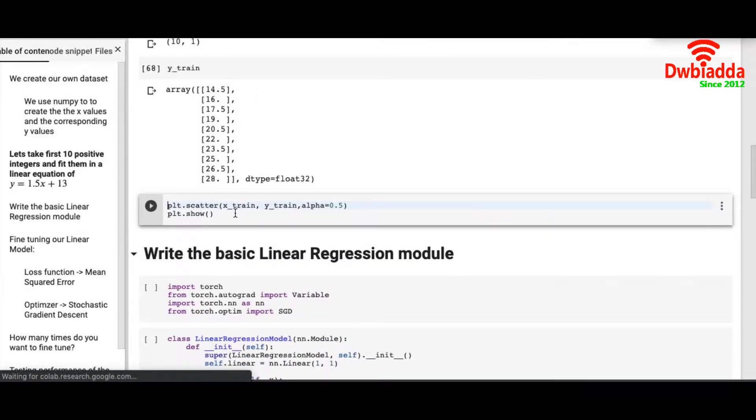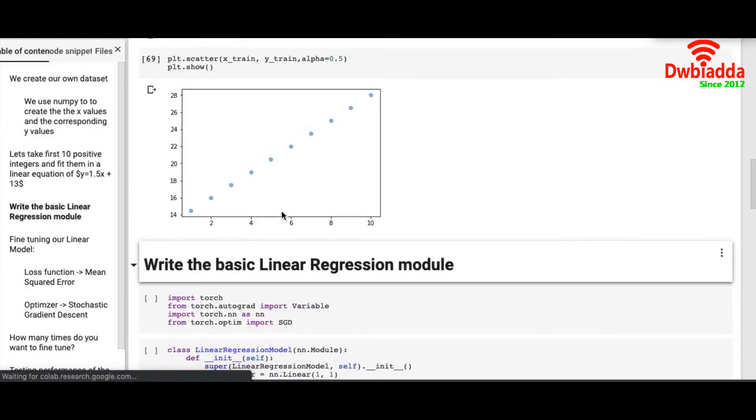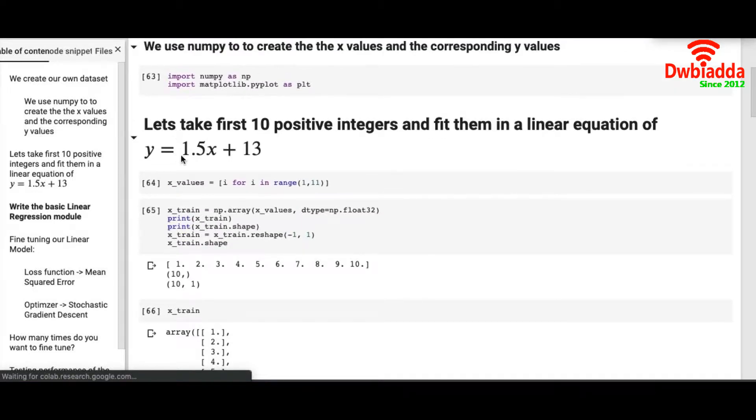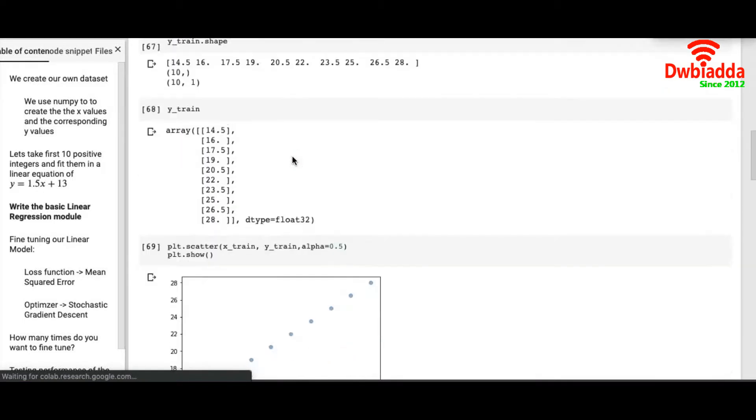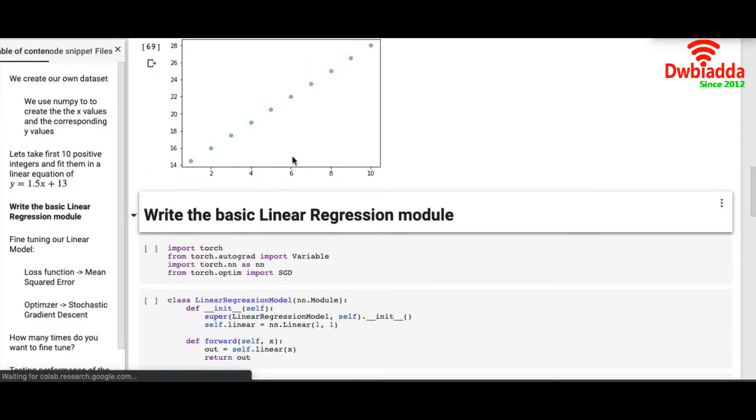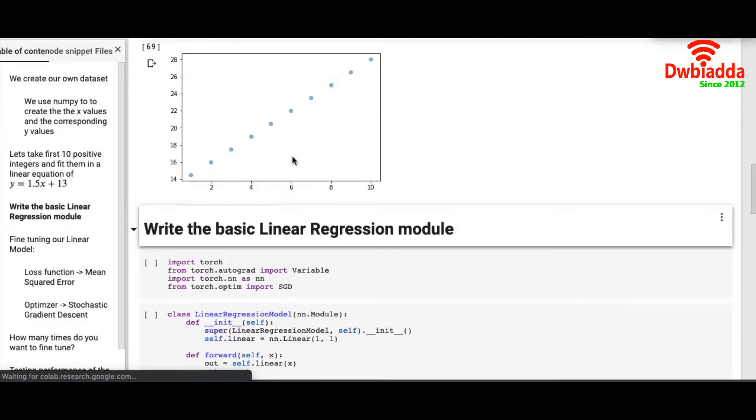When we plot the data it will form a straight line, as you can see, because it comes from the linear equation Y equals 1.5X plus 13. Now we will build a linear regression model in PyTorch that will try to predict this equation.